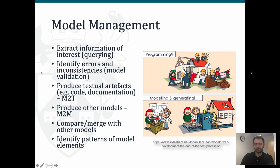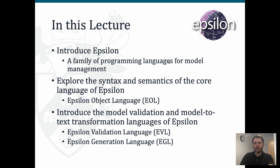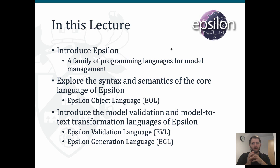In this lecture I'm going to introduce Epsilon, which is a family of languages for programmatic model management. In particular we're going to focus on three languages of the platform. Epsilon has seven or eight different languages, but we're only going to focus on three because we only have one hour. We're going to start with EOL, which is the core expression language of Epsilon, and then I will briefly present the model validation and model-to-text transformation languages, which are EVL and EGL respectively.